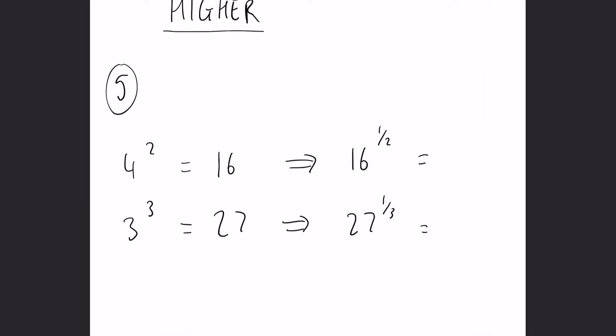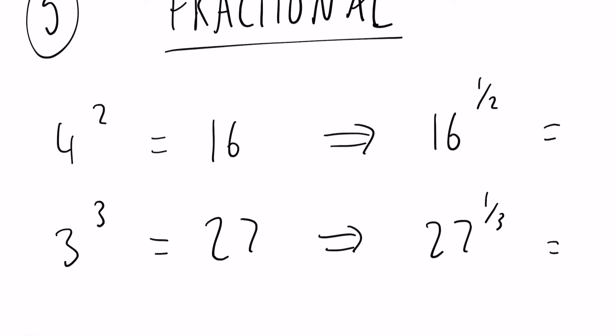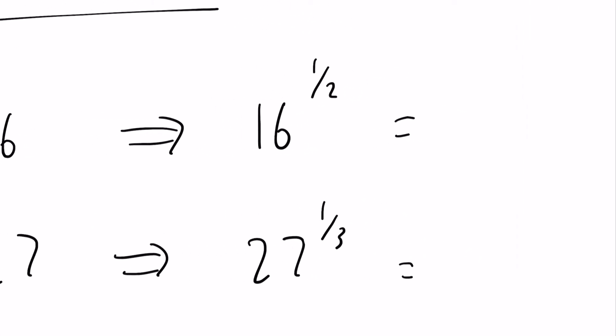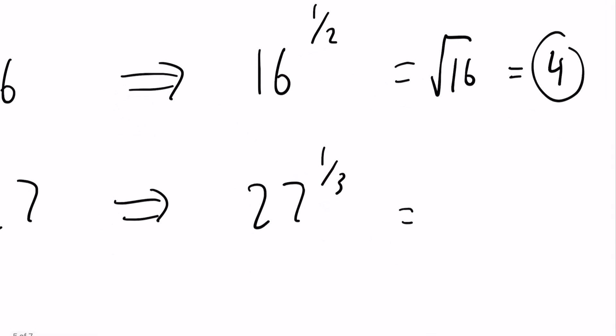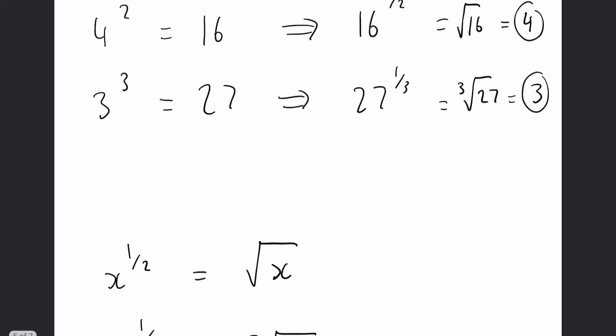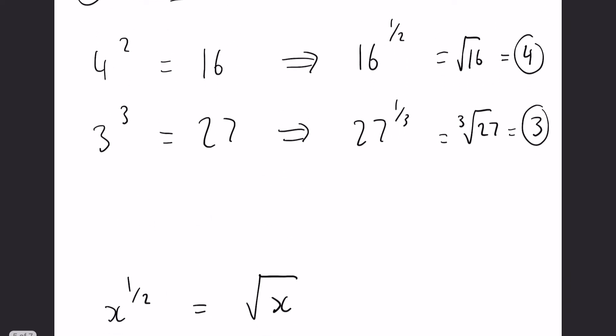Okay but for those higher candidates then these are definitely very important to understand. So what happens when we have fractional powers? Now we know that four squared equals 16 and three cubed equals 27, but when we reverse it, 16 to the power of a half actually just means the square root of 16 so that is four, and 27 to the power of a third is the cube root of 27 and that equals three.